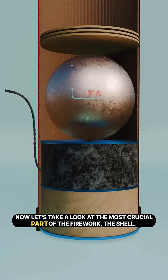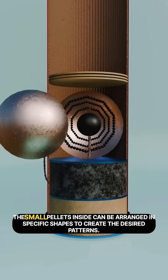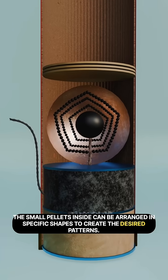Now let's take a look at the most crucial part of the firework, the shell. The small pellets inside can be arranged in specific shapes to create the desired patterns.